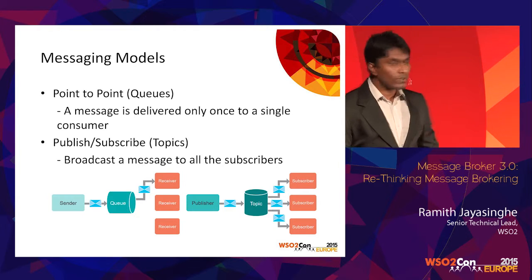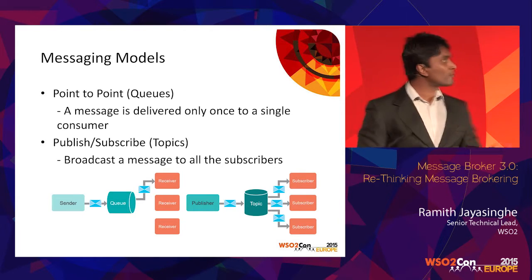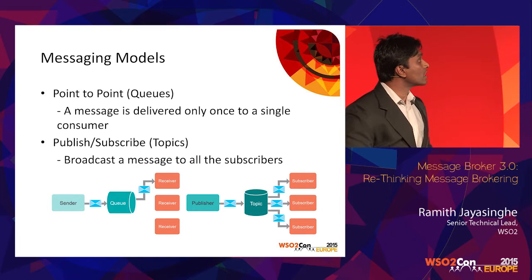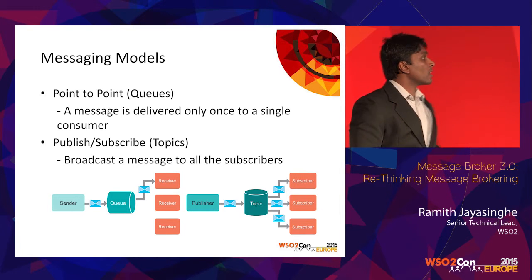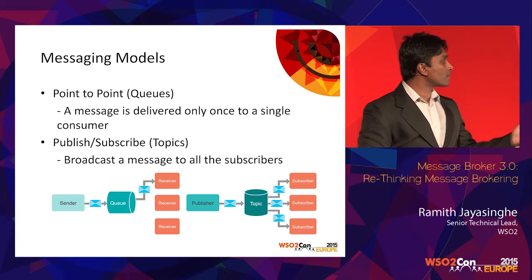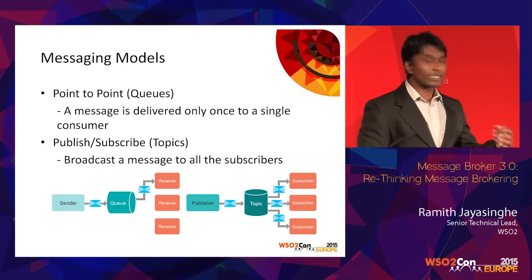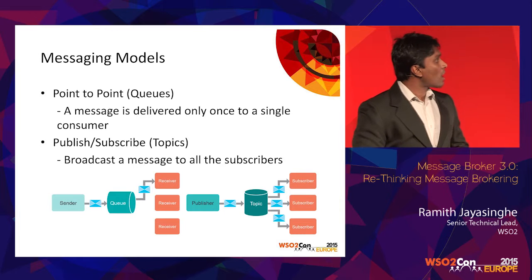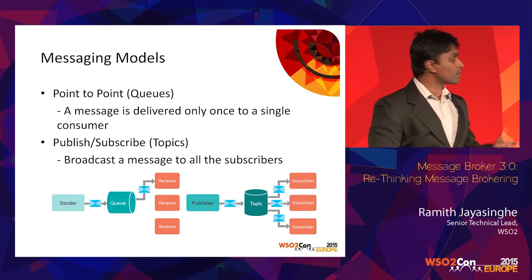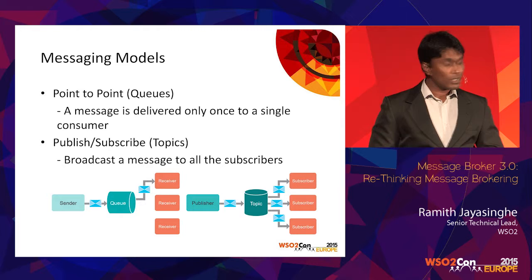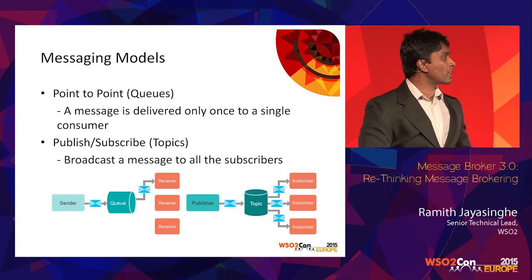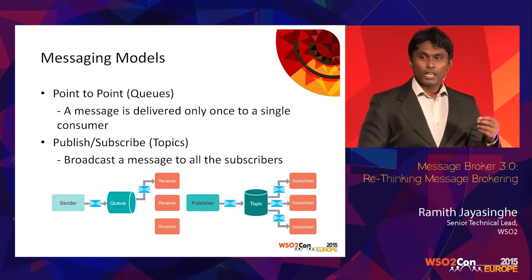When we talk about messaging, there are a couple of messaging models that exist. The first one is queues, where you keep on sending messages and there will be one person who receives each message. The other paradigm is topics — the pub-sub model — where you keep on sending messages and each subscriber receives a copy of it.